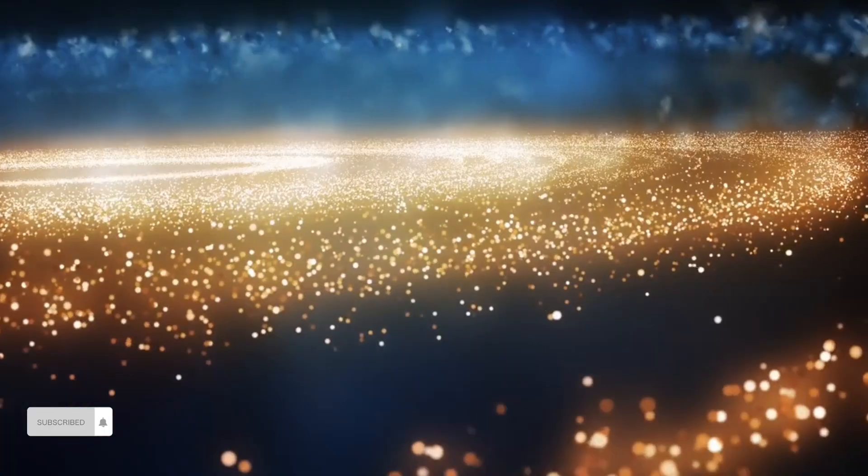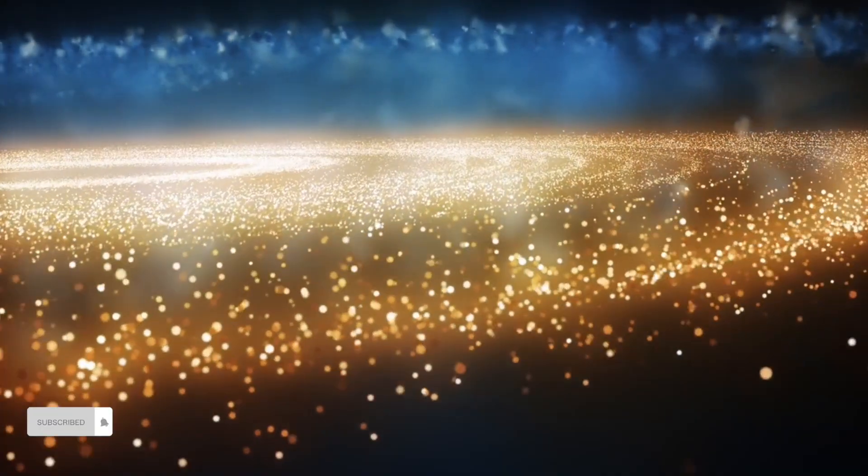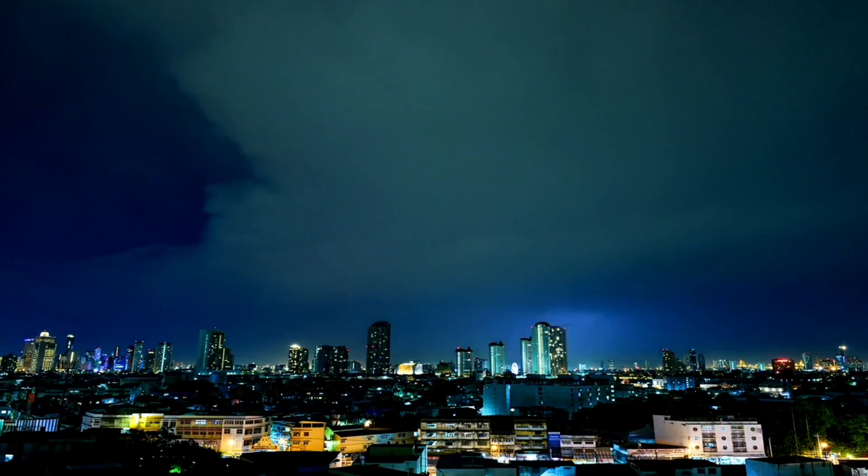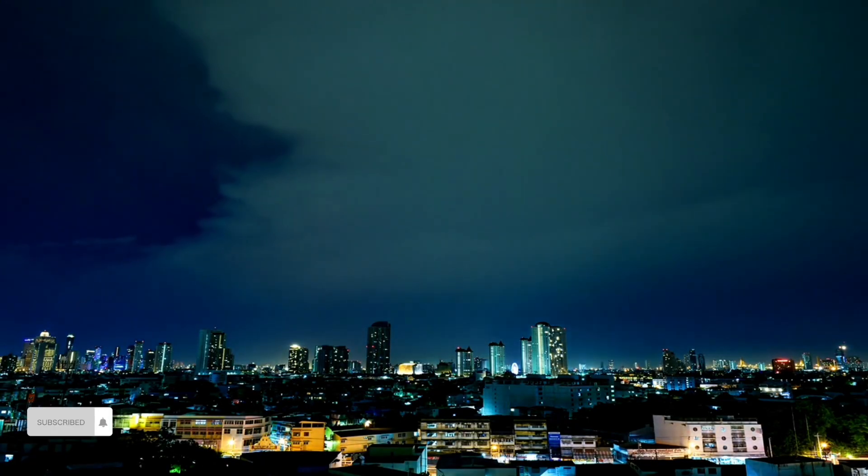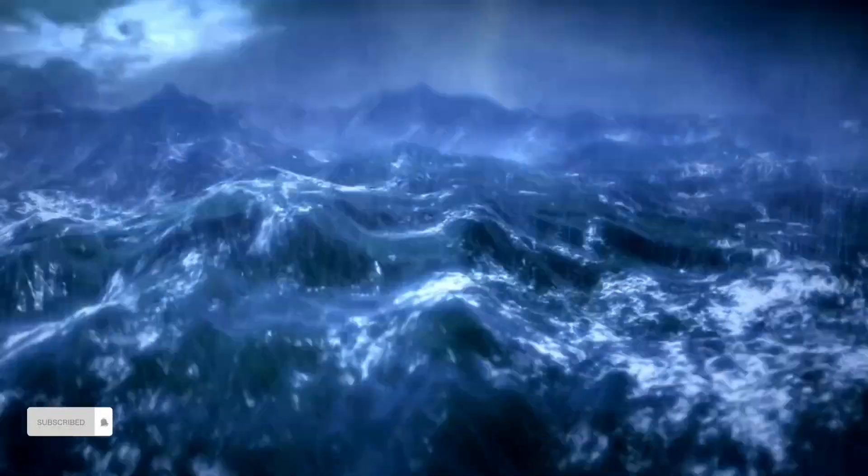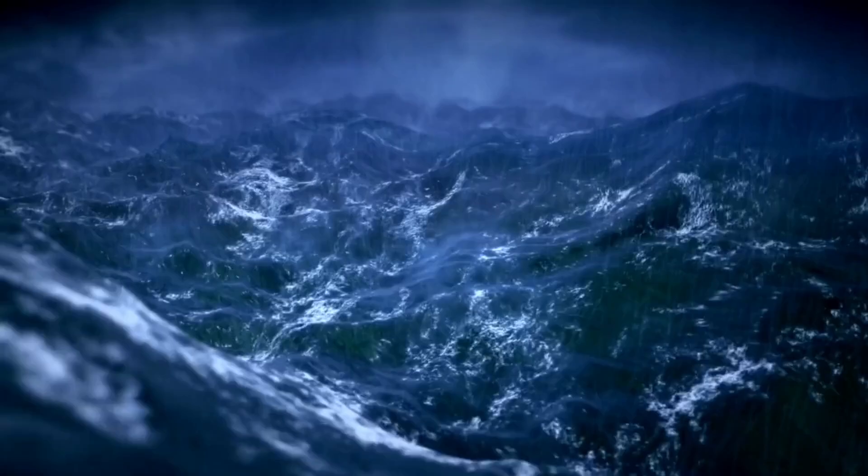Since light does not move instantly but takes time to travel across space, we are only able to see things whose light has had enough time to reach us. That means we are looking at the past whenever we look far into space. The farther something is, the older the light we are seeing.